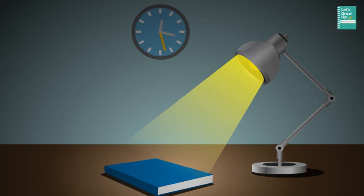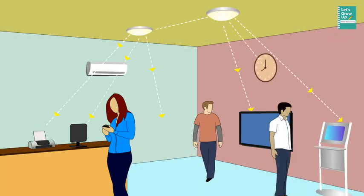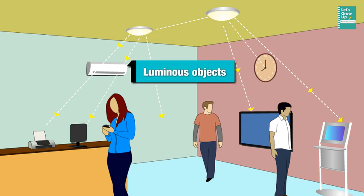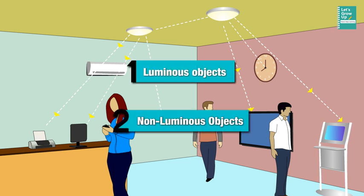All the objects that we see around us can be categorized into two categories. One is luminous object and other is non-luminous object.